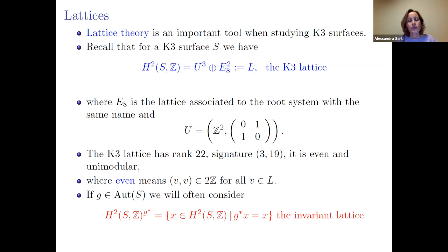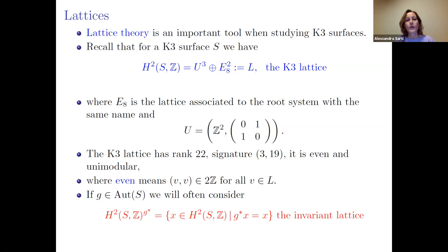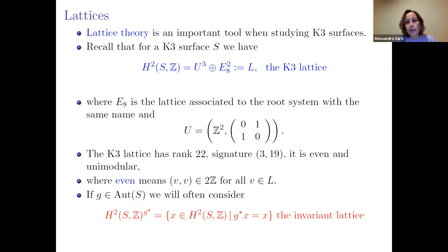When one talks about K3 surfaces, lattice theory is an essential tool. For a K3 surface, the second cohomology H²(S, ℤ) is always the same — it does not depend on the K3 surface. It is three copies of U (the hyperbolic plane) and two copies of E₈, and I call this the K3 lattice. It is a rank-22 lattice of signature (3,19).